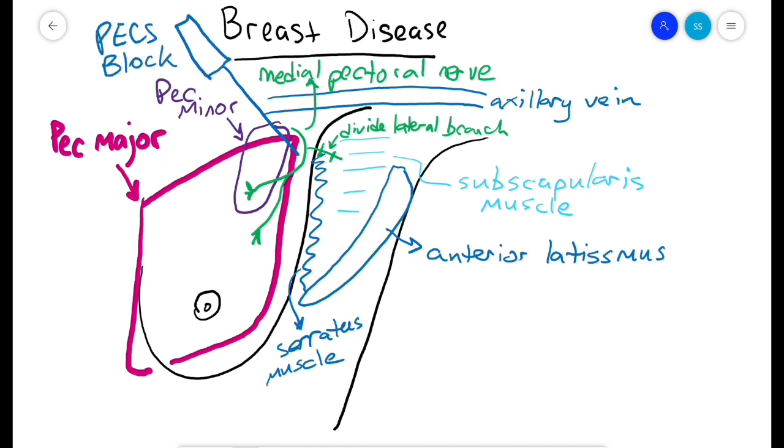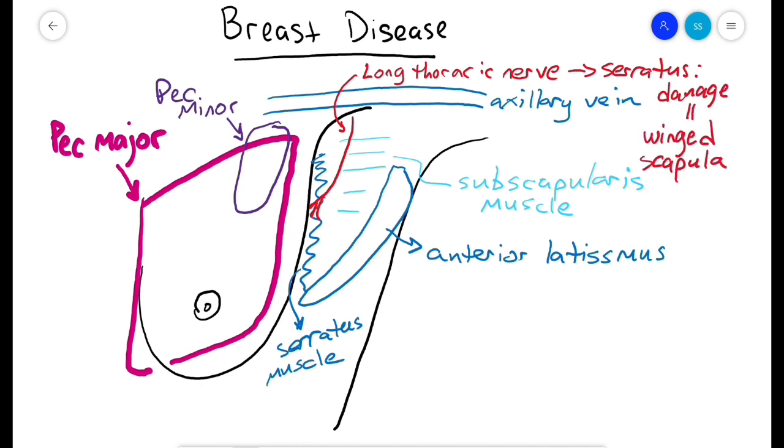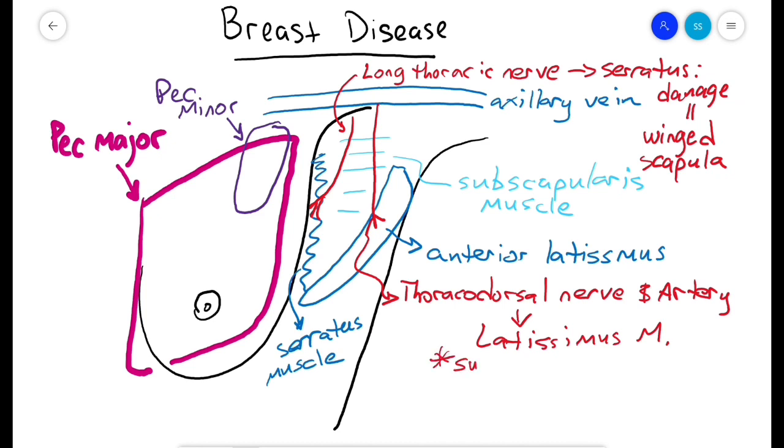An ultrasound-guided regional block called the pecs block can anesthetize the pectoral nerves prior to breast and axillary surgery. The long thoracic nerve runs along the serratus medially, and damage causes winged scapula. The thoracodorsal nerve runs posterior to the axillary vein along the subscapularis muscle with its similarly named artery and vein, supplying the latissimus muscle. Damage causes weak pull-ups.